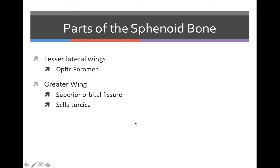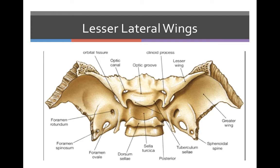The sphenoid bone is split into two parts: the lesser lateral wings and the greater wing. In the lesser lateral wings we have the optic foramen, and in the greater wing we have the superior orbital fissure and the sella turcica. In this diagram the lesser lateral wings are the small raised area right here — the smaller of the wings — and the greater wing is down here, the larger portion of the sphenoid.